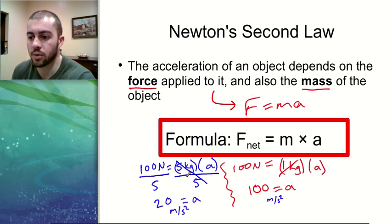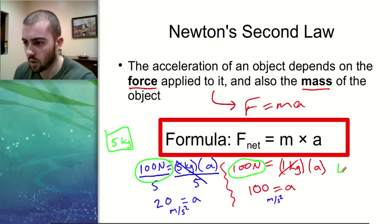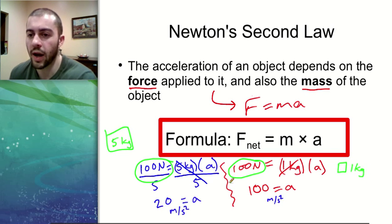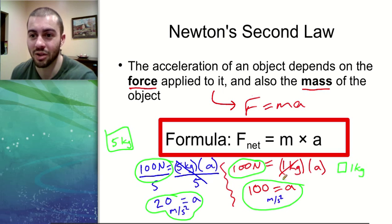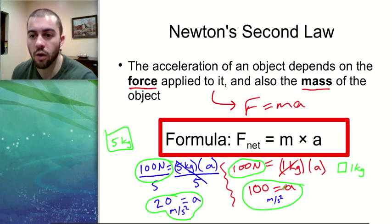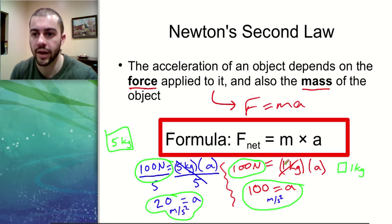Looking at this, we have the heavier object — both objects have the same 100 Newton force acting on them. We have the big five kilogram object and the smaller one kilogram object. With the same force acting on these two objects, the heavier object is not going to accelerate as quickly. We get 20 meters per second squared for the five kilogram object and 100 meters per second squared for the one kilogram object. A lighter object with the same force will accelerate more effectively.